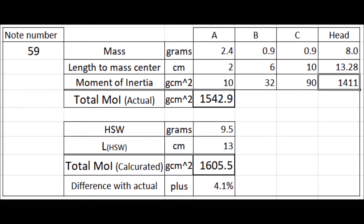Next, the sample from the middle section. Actual measurement was 1542.9. Calculated amount is 1605.5. The difference between them is 4.1%.